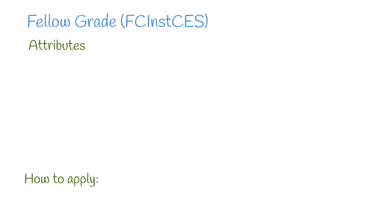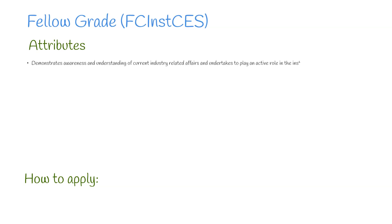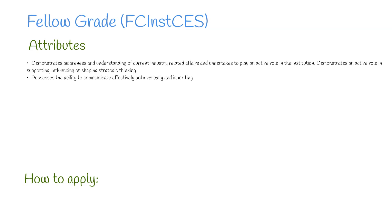Lastly, we have Fellow grade, which includes a designation. Fellows will have significant senior experience as a civil engineering surveyor and will have demonstrated a contribution to the industry or to CICES that is over and above their everyday professional work. Applicants will be assessed against several attributes, including demonstrating awareness and understanding of current industry-related affairs, undertaking an active role in the institution, and demonstrating an active role in supporting, influencing or shaping strategic thinking. Fellows must also possess the ability to communicate effectively both verbally and in writing, and to persuade and influence others to gain agreement with and acceptance of ideas.